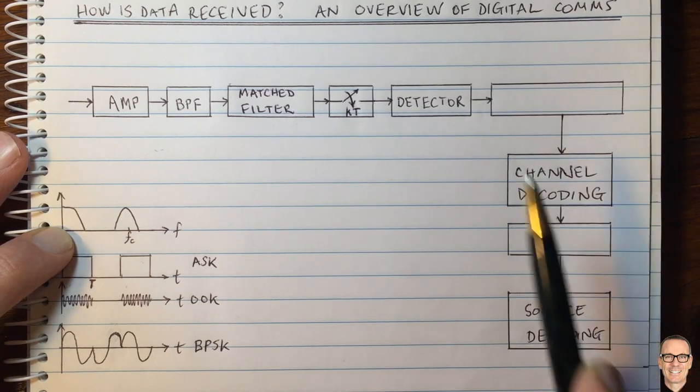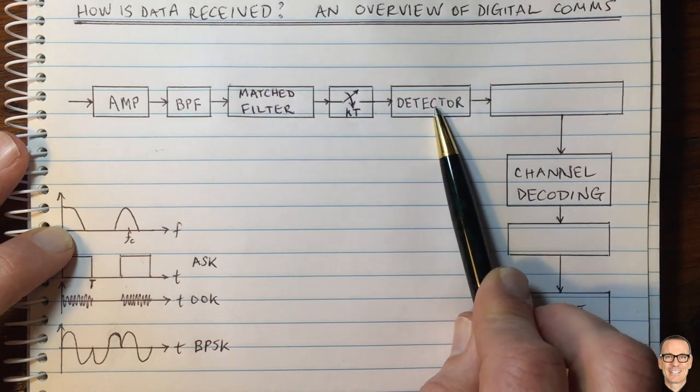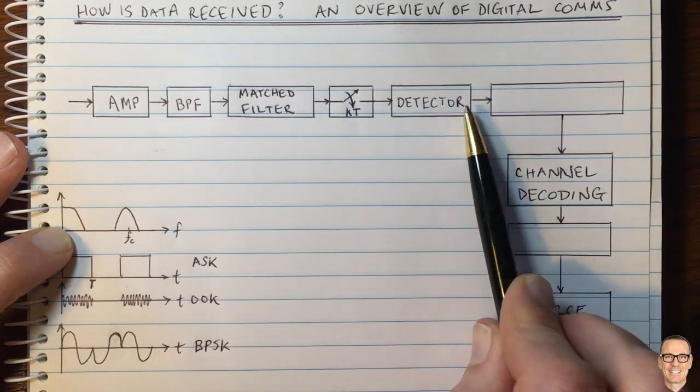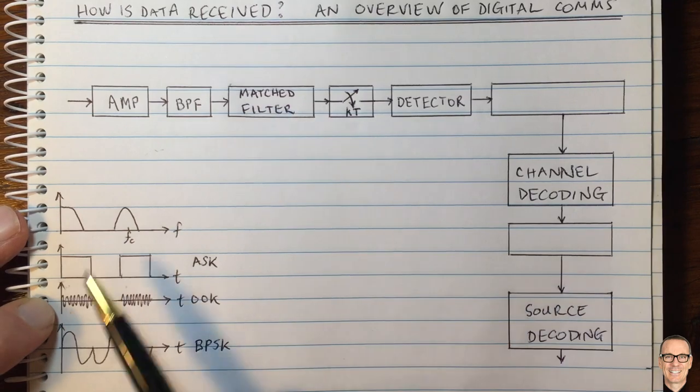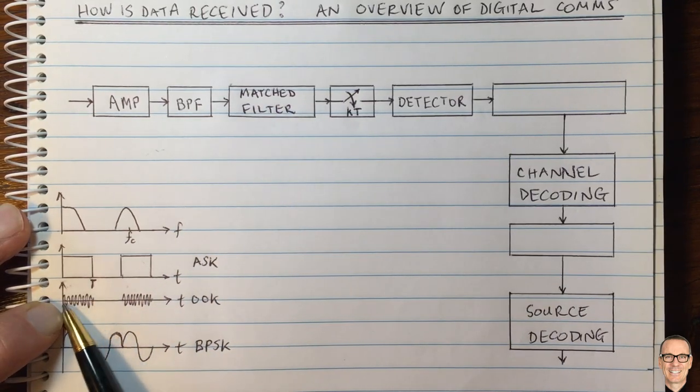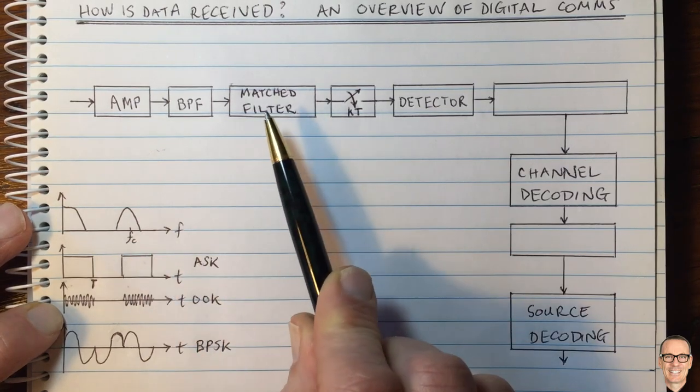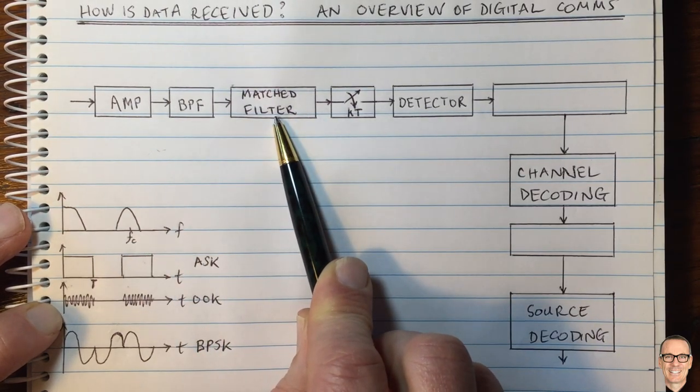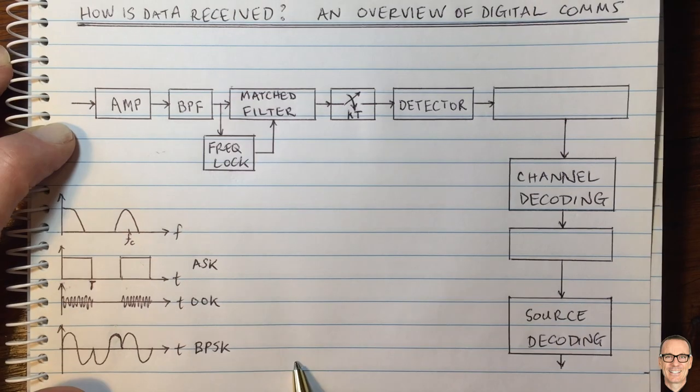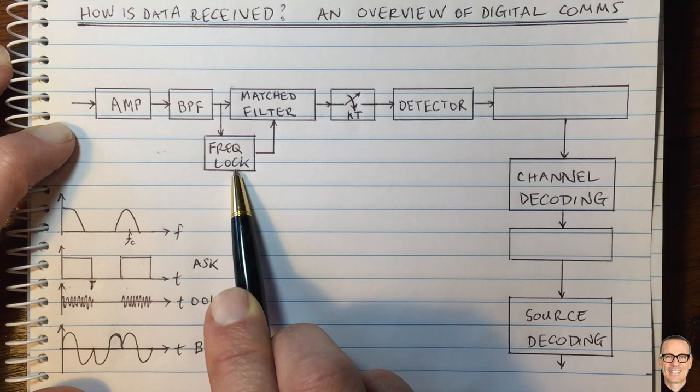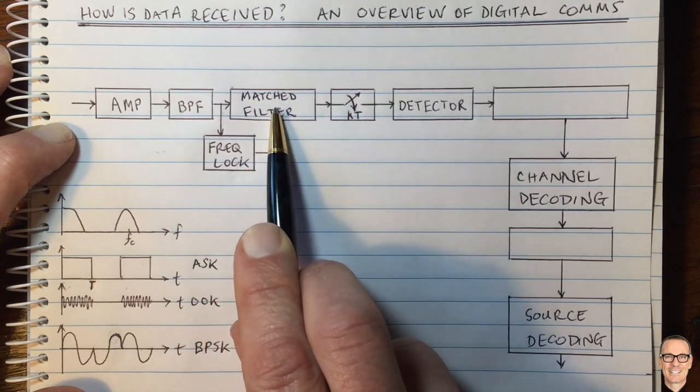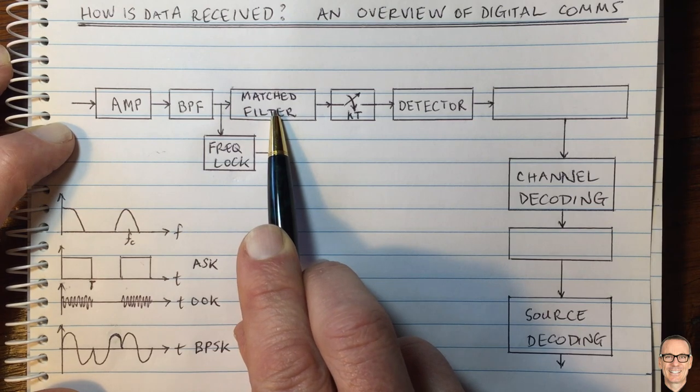Before we go on, let's think about what we need to do to actually implement these. To do the matched filter, we need our filter exactly aligned at the same frequency as the waveform coming to us. We need something called frequency locking. Frequency locking is required because the crystal oscillator in your receiver may not be oscillating at exactly the same frequency as the one used in the transmitter. It's important to tune the frequency to make sure your matched filter is exactly matched to the transmit waveform.